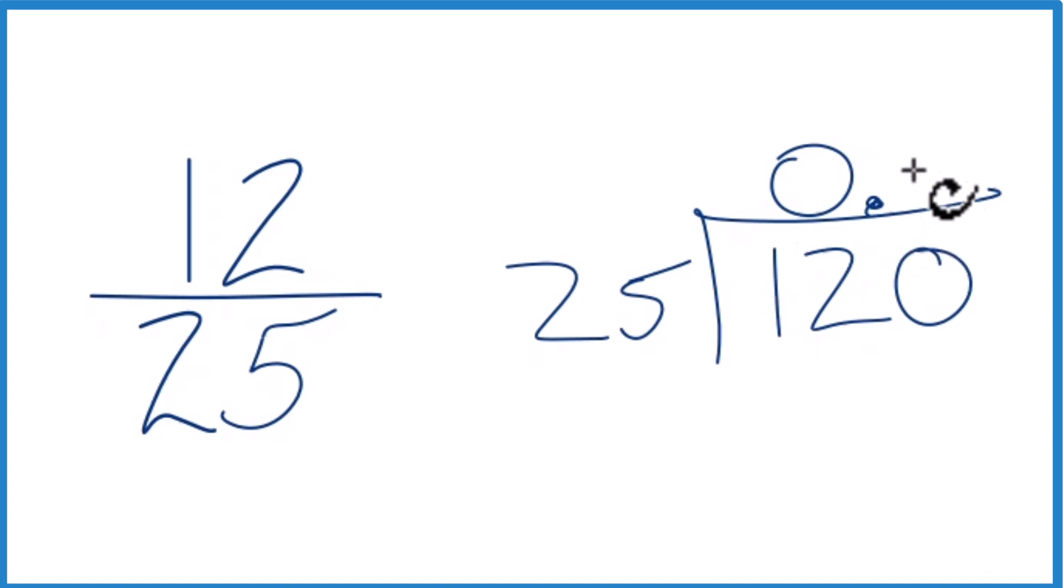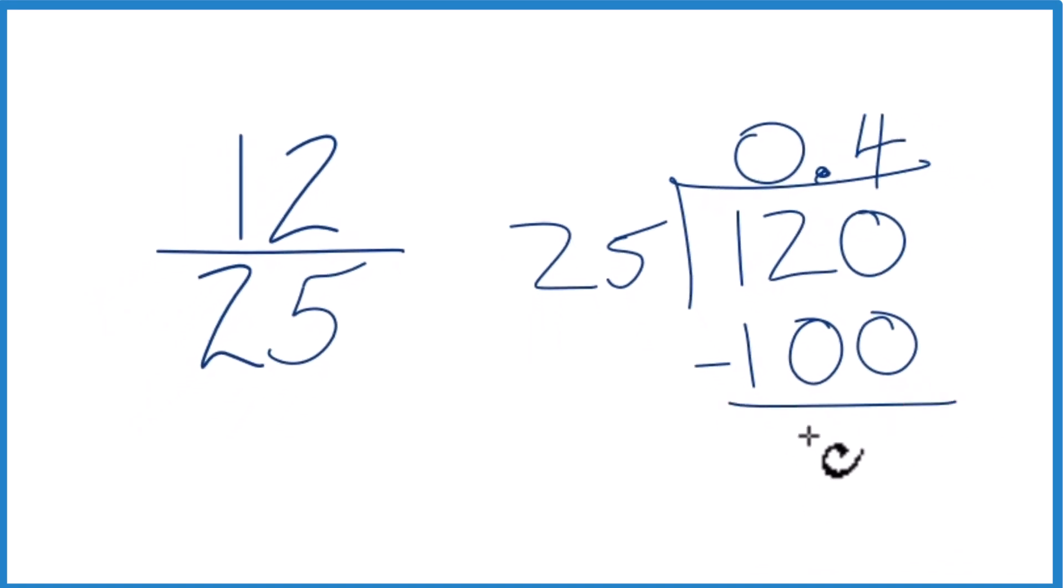So now 4 times 25, that's 100. And when we subtract, we have 20.